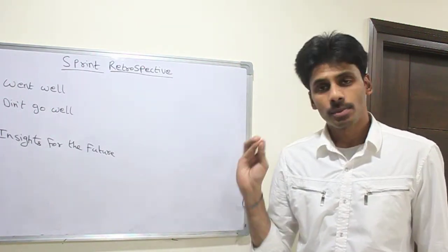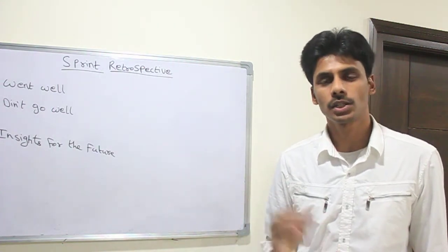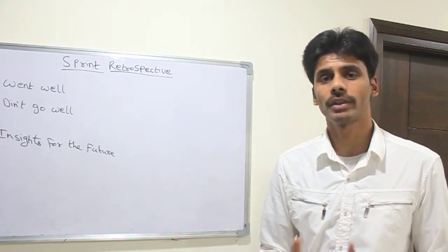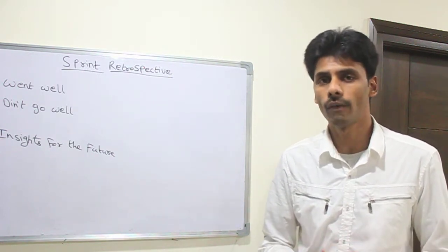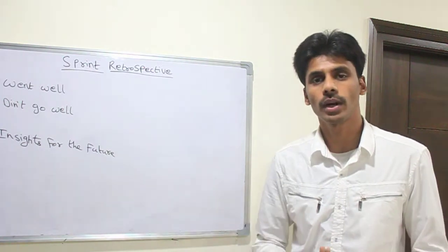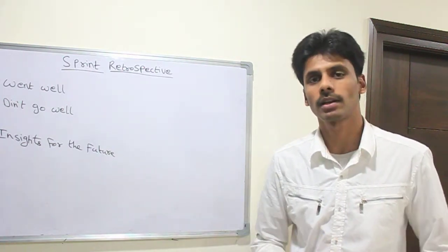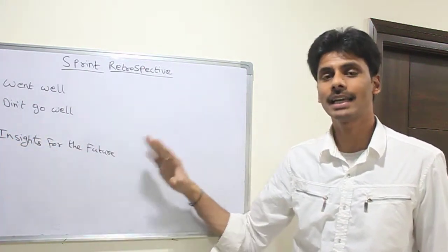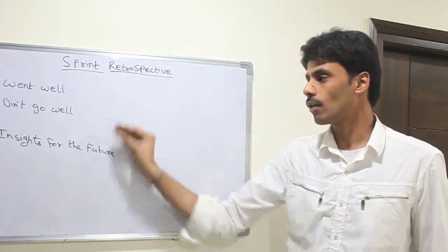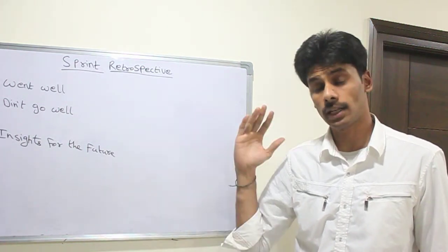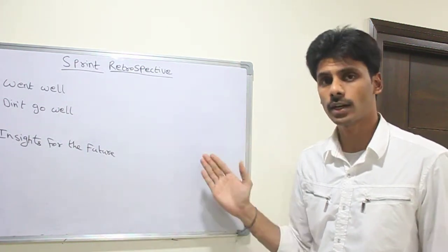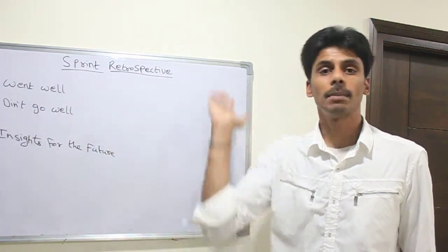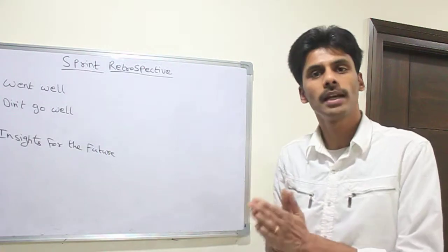To quickly summarize, a sprint retrospective happens at the end of the sprint. This is where we all meet as a team along with the scrum master and discuss what went well, what didn't go well, and the insights for improving things in the next sprints. Usually the scrum master prepares an Excel sheet or keeps track of everything discussed so that in the next sprint planning and retrospective meetings, we can bring this up and see if what didn't go well in the previous sprint has improved in the next sprint.